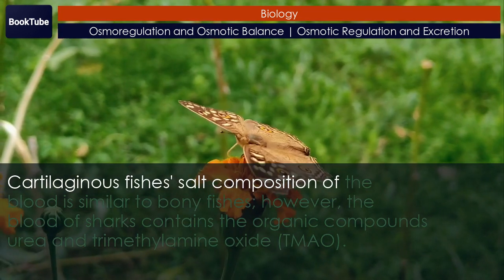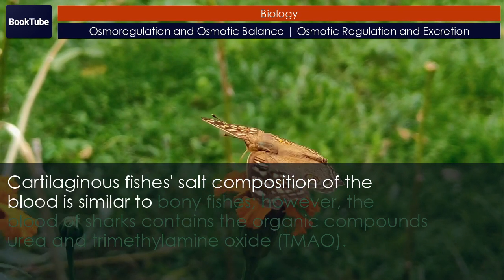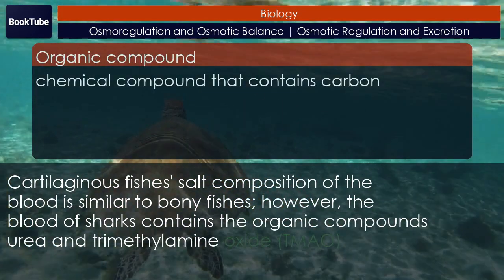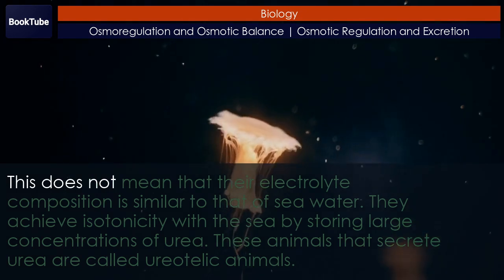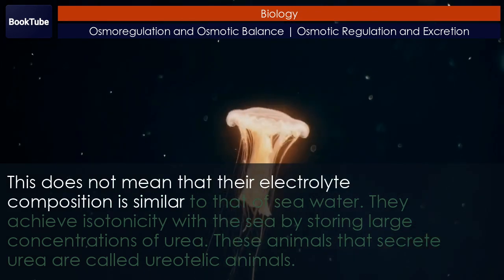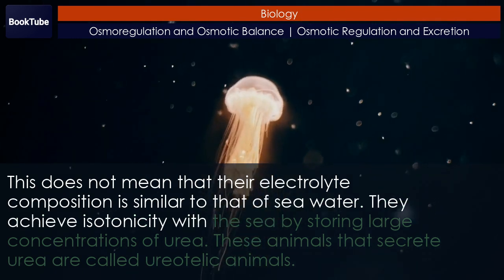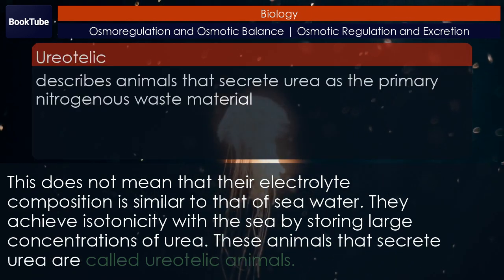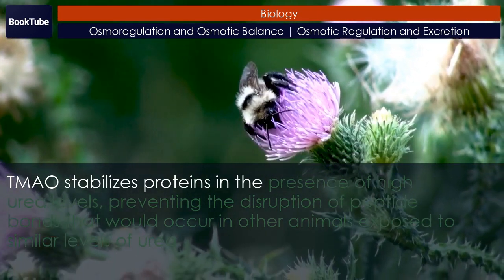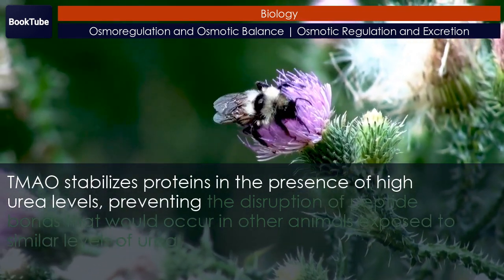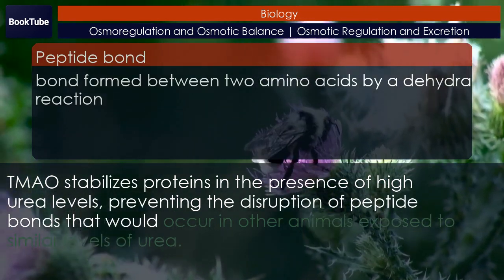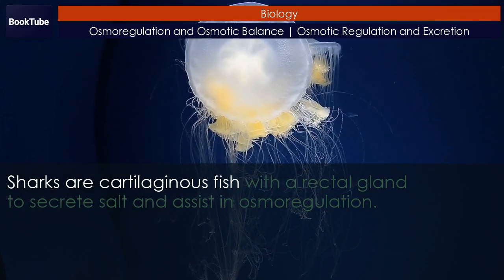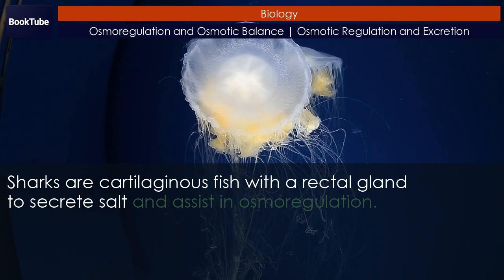Cartilaginous fishes' salt composition of the blood is similar to bony fishes. However, the blood of sharks contains the organic compounds urea and trimethylamine oxide (TMAO). This does not mean that their electrolyte composition is similar to that of seawater. They achieve isotonicity with the sea by storing large concentrations of urea. These animals that secrete urea are called ureotelic animals. TMAO stabilizes proteins in the presence of high urea levels, preventing the disruption of peptide bonds that would occur in other animals exposed to similar levels of urea. Sharks are cartilaginous fish with a rectal gland to secrete salt and assist in osmoregulation.